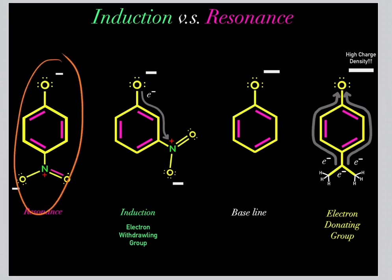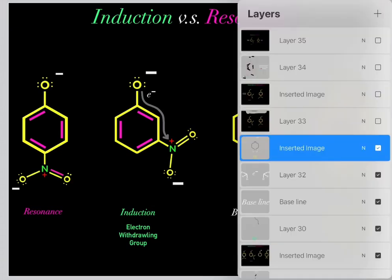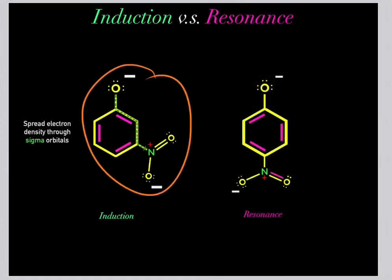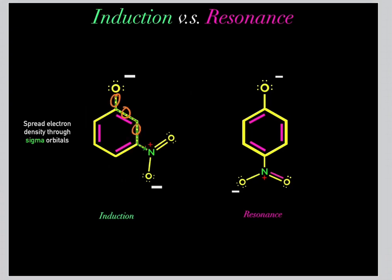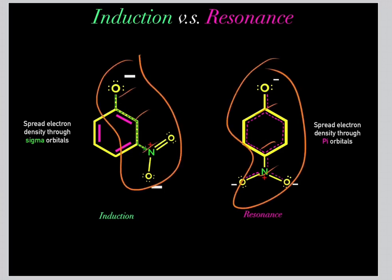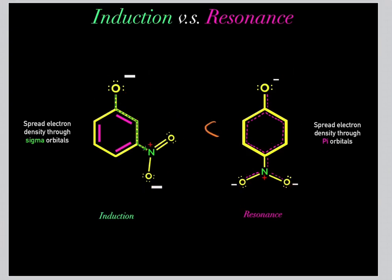So the key point is that resonance is king — resonance is usually the most stable way to stabilize negative charge density. Then comes induction. Then you have the baseline case. And when you have electron-donating groups, that makes it even more unstable. In induction, negative charge is delocalized through sigma bonds and sigma bond electrons. In resonance, negative charge is delocalized through pi bonds and the pi bond system. Both are ways to delocalize negative charge and lower charge density, but most of the time resonance is more stable than induction. That concludes the video on induction versus resonance.